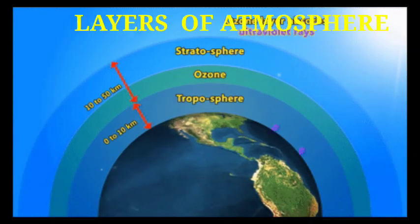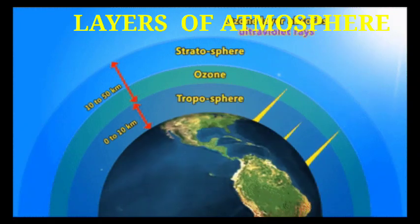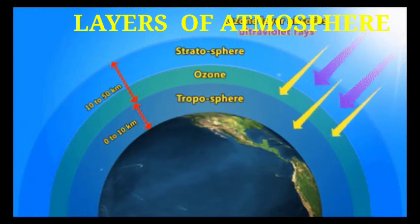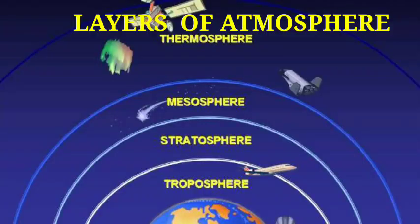Now we will talk about the layers of atmosphere. Earth is surrounded by air as we have already discussed, but there are different layers of atmosphere. Today we will talk about each layer and the uses of every particular layer for the Earth. The first layer is the troposphere, just nearest to the Earth. The second layer is the stratosphere, the third is the mesosphere, and the fourth is the thermosphere. Every layer has different properties, different gases, and different temperatures.